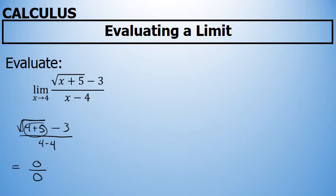0 over 0 is known as the indeterminate form. It doesn't tell us anything about what the limit actually is, but it does imply that the limit exists.